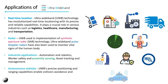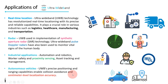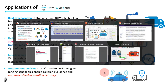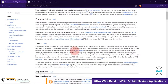In autonomous vehicles, UWB's precise positioning and ranging capabilities enable collision avoidance and centimeter-level localization accuracy, surpassing traditional GPS systems. Moreover, its high data rate and low latency facilitates seamless vehicle-to-vehicle communication. Now let's discuss the most important and popular UWB application — mobile devices with ultra-wideband capability. For that, let me take you to the Wikipedia page of this technology.